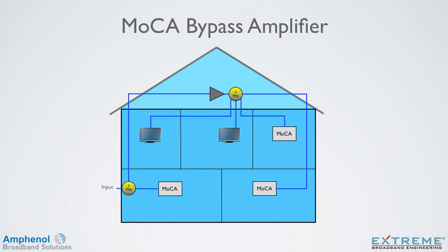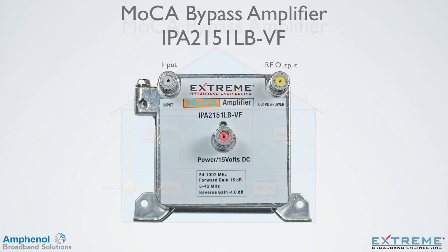First, we'll look at the MoCA bypass amplifier. Here I'm showing a wiring configuration where there are MoCA devices on both the input and output sides of a traditional one-output amplifier, and standard CATV devices on the output of the amplifier. As we discussed earlier, due to the high isolation loss at the MoCA frequencies through the amplifier, the MoCA devices may not be able to communicate.